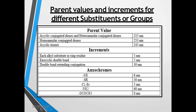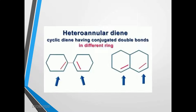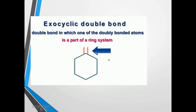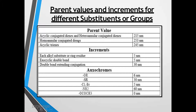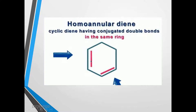The base value or parent value for acyclic conjugated diene or heteroannular conjugated diene is 250 nanometers. Acyclic means an open chain structure, for example butadiene. If this is the basic structure, then the value assigned to that part of the molecule is 250 nanometers. If it is a homoannular conjugated diene — meaning the diene is inside only one ring — then the base value or parent value assigned is 253 nanometers.